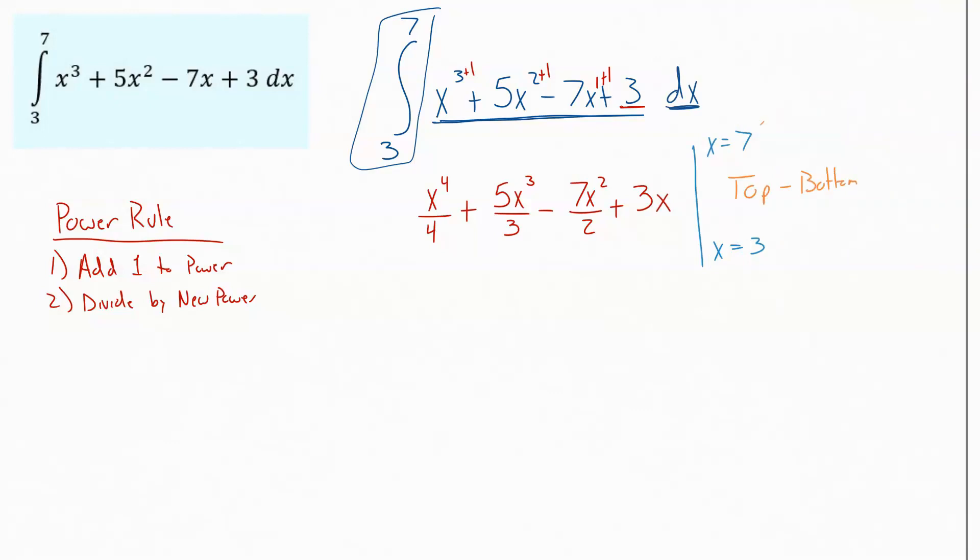You're going to take the top value, plug it into your equation, and subtract off the bottom value plugged into the equation. So then starting at the front here, plugging 7 in, we'd end up with 7 to the 4th over 4, plus 5 times 7 to the 3rd over 3, minus 7 times 7 squared over 2, plus 3 times 7. So that's our top portion.